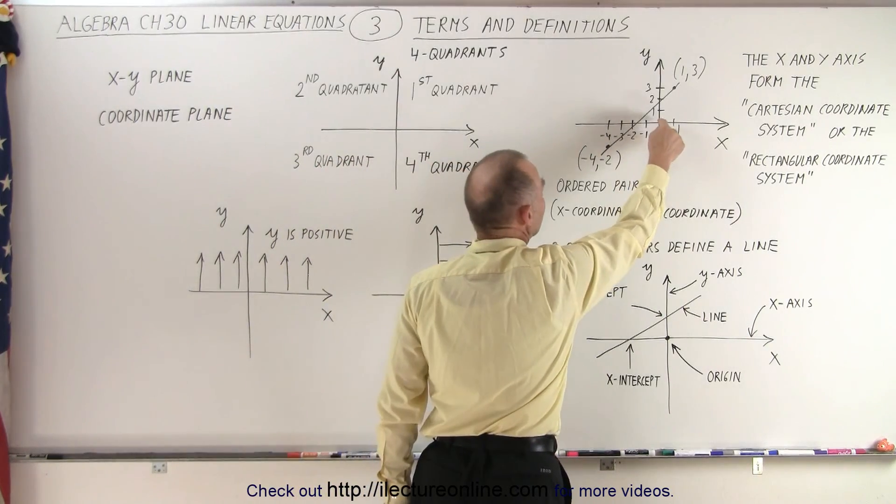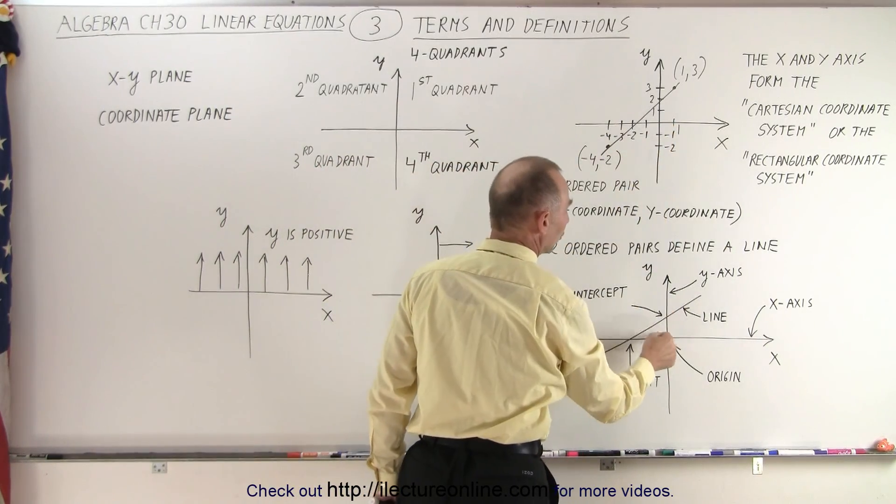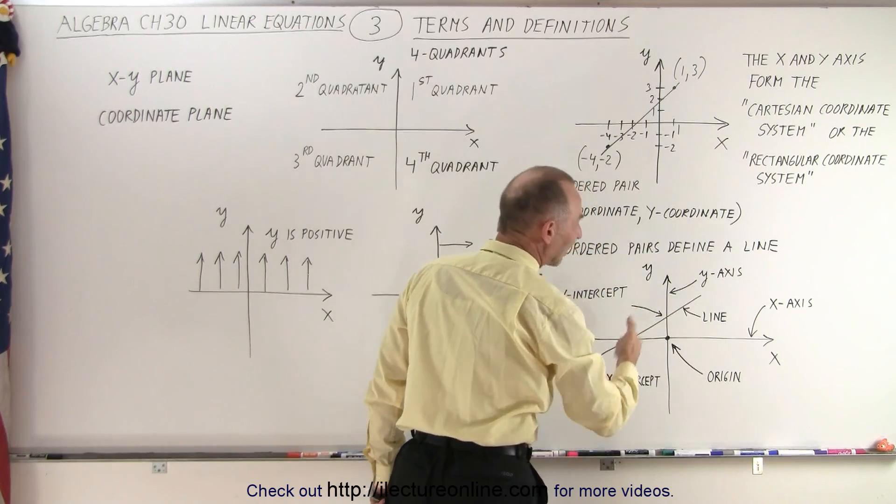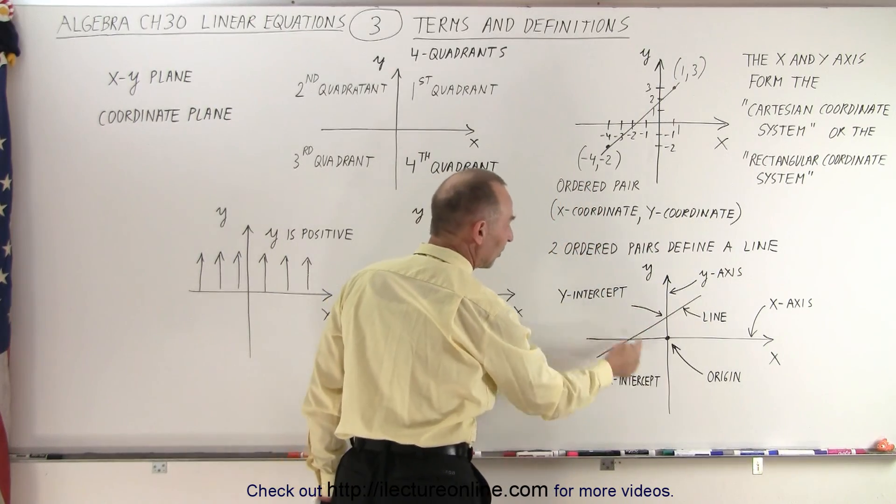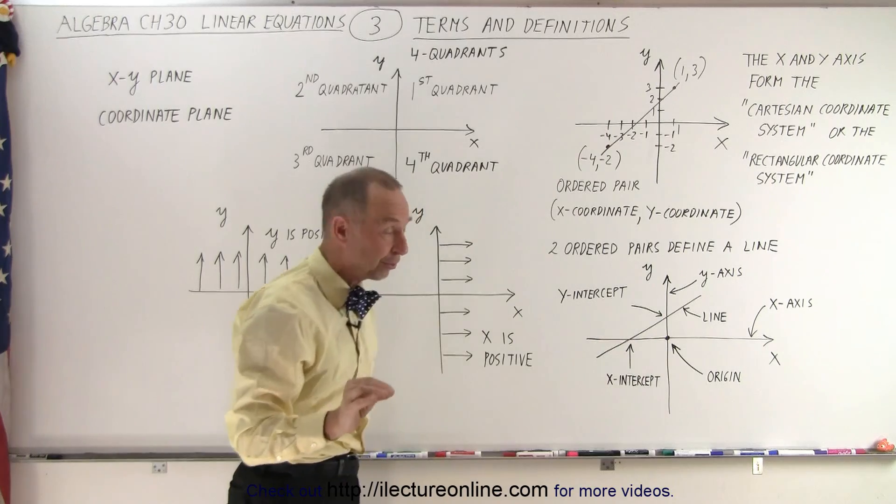Where the two lines meet, the x and the y-axis meet, that's called the origin. A line will typically cross both the x and the y-axis. So we have an x-intercept and a y-intercept. Those are important points of that line.